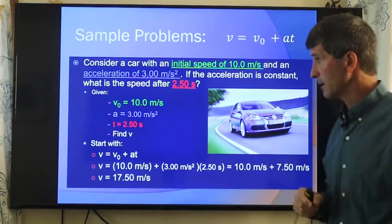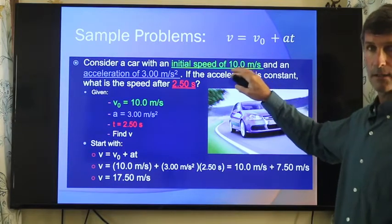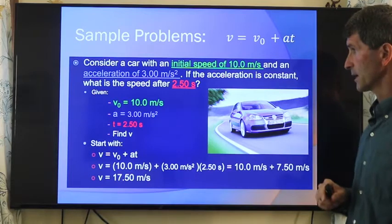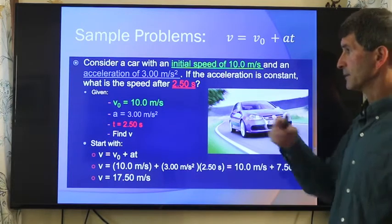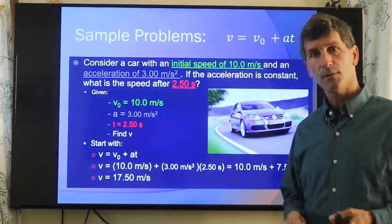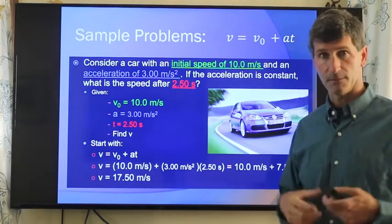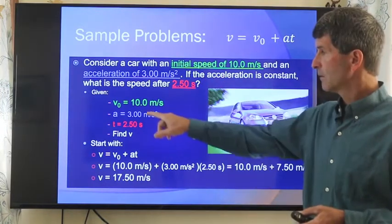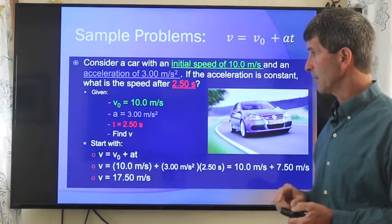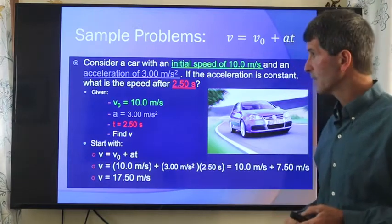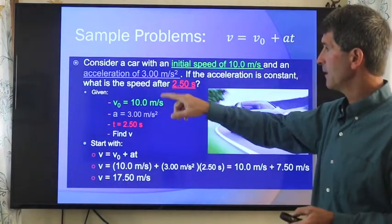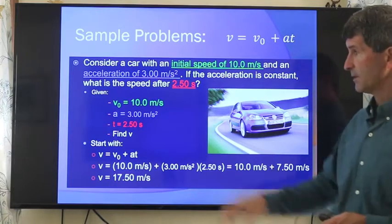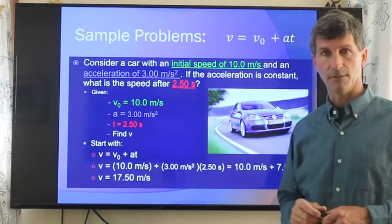Now, take a look at this problem right here. We're given a number of pieces of information. It says here, consider a car with an initial speed of 10 meters per second and an acceleration of 3 meters per second squared. If the acceleration is constant, what is the speed after 2 seconds? Read through the problem. Identify what you're given. This is really the essence of putting these problems together. We're given initial speed, v₀. We're given the acceleration, 3 meters per second squared. We're even given time, 2.5 seconds. It then asks, what is the speed? What is the final speed? So they're asking for v here.